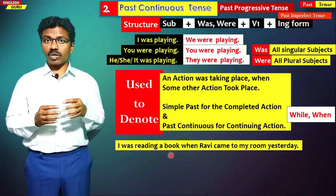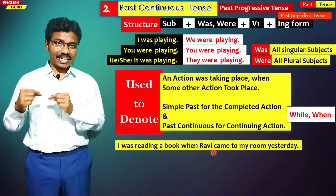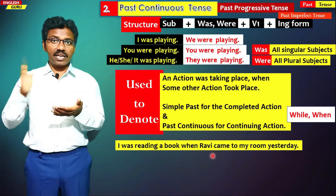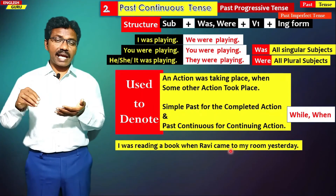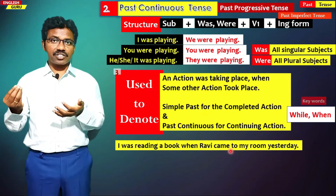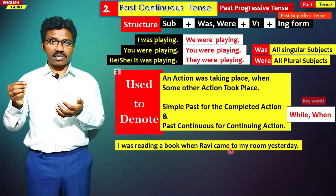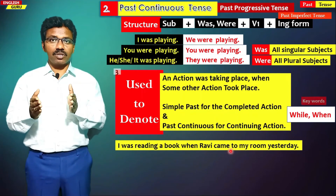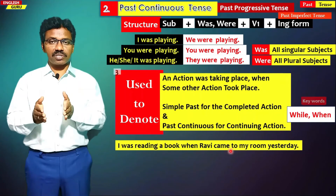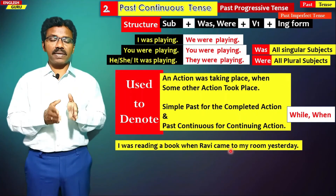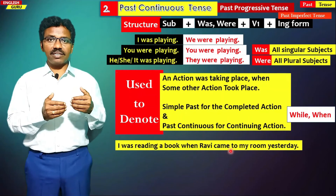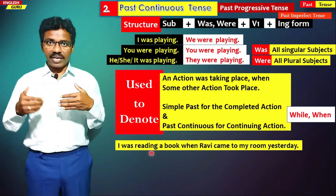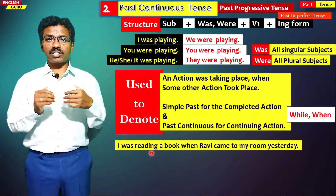Example: I was reading a book when Ravi came to my room yesterday. There are two verbs: was reading and came. I was reading — the activity of reading was continuing. Ravi came — he already came, so that action completed, and that is why it is written in simple past tense: subject Ravi plus verb 2 came. I was reading is in past continuous tense: subject plus was plus verb plus ing form.